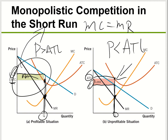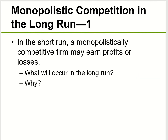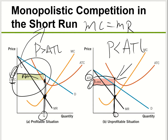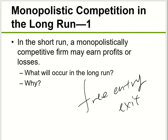But in the long run, you're going to see something entirely different. Remember, this market has free entry and free exit. That means in the long run, if companies in panel A are making a profit, other companies would join in and compete. When other companies join and compete, they will drive down the demand for this company — price goes down and profit goes away.